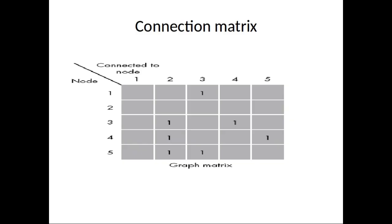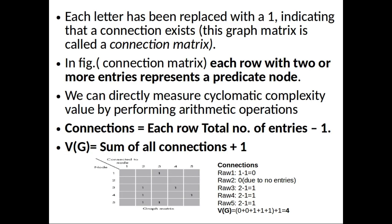In the matrix, each letter has been replaced with a one, indicating that a connection exists. This graph matrix is called a connection matrix. In the connection matrix, each row with two or more entries represents a predicate node. We can directly measure cyclomatic complexity value by performing arithmetic operations.